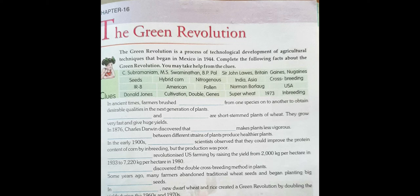So in chapter number 16, the Green Revolution. What is the Green Revolution? It is a process of technological development of agricultural techniques. There was a revolution in agriculture during this period — better quality of seeds, advanced technologies came, which led to an increase in production in agriculture.